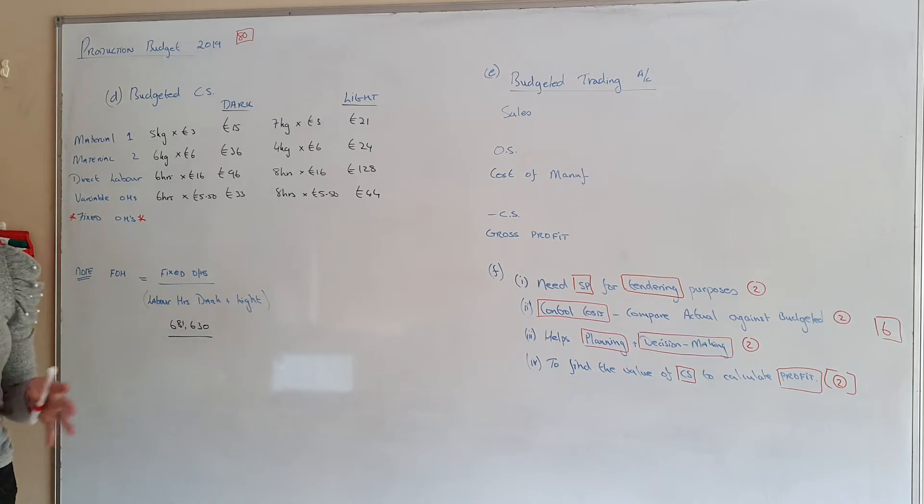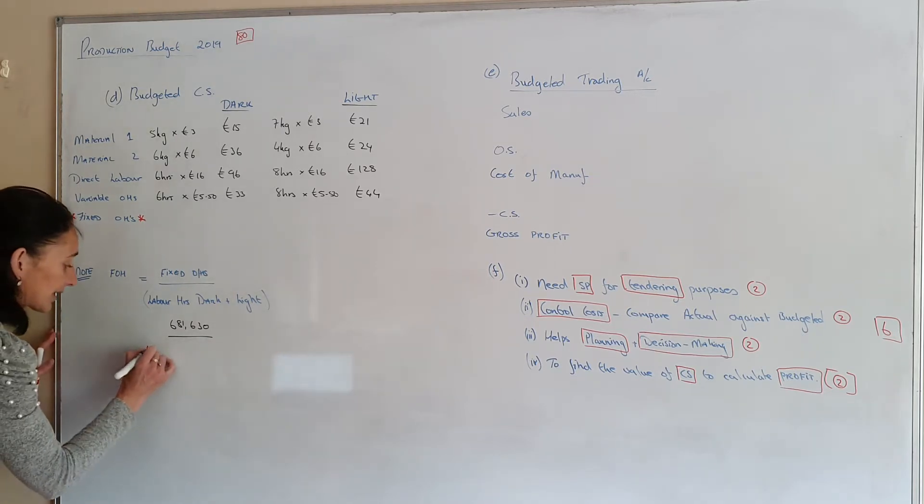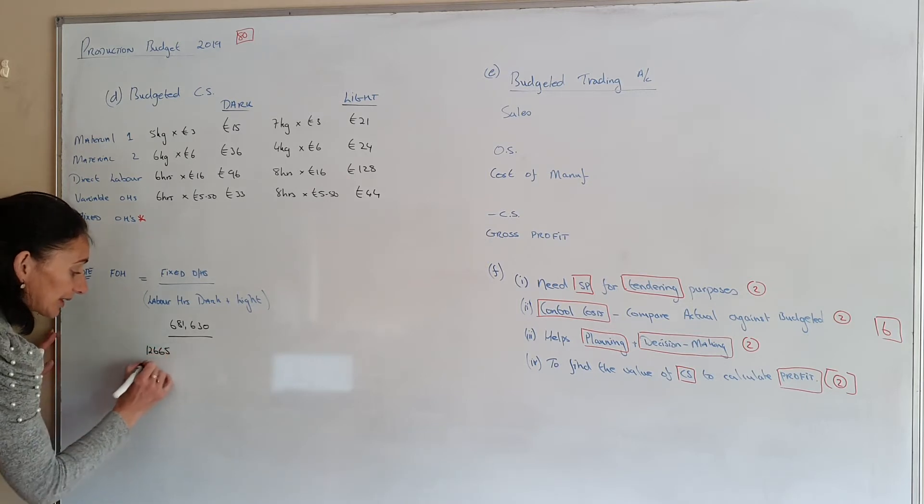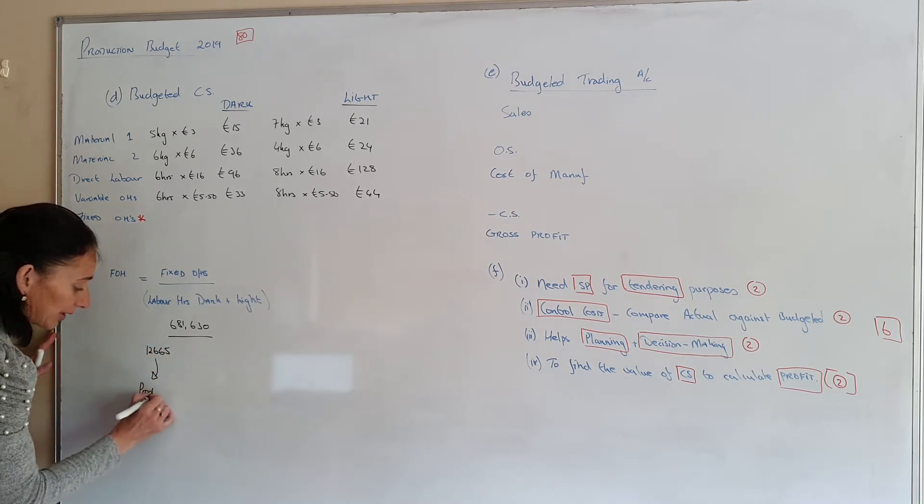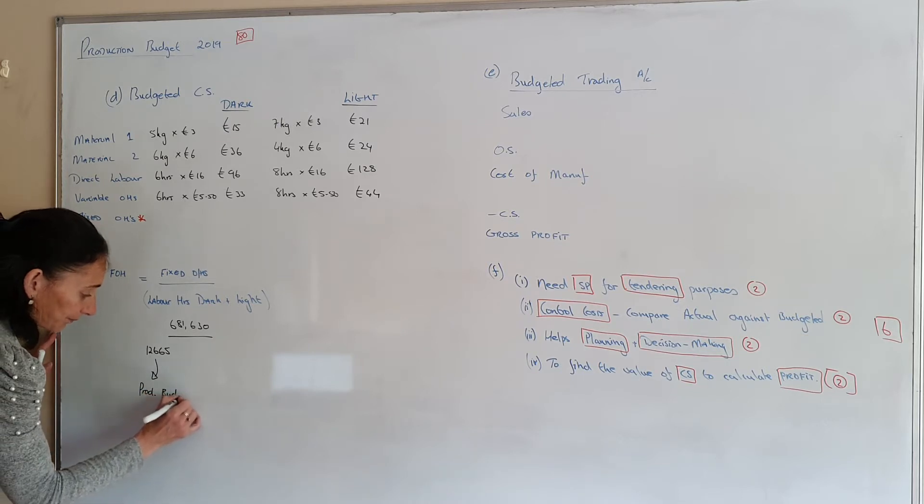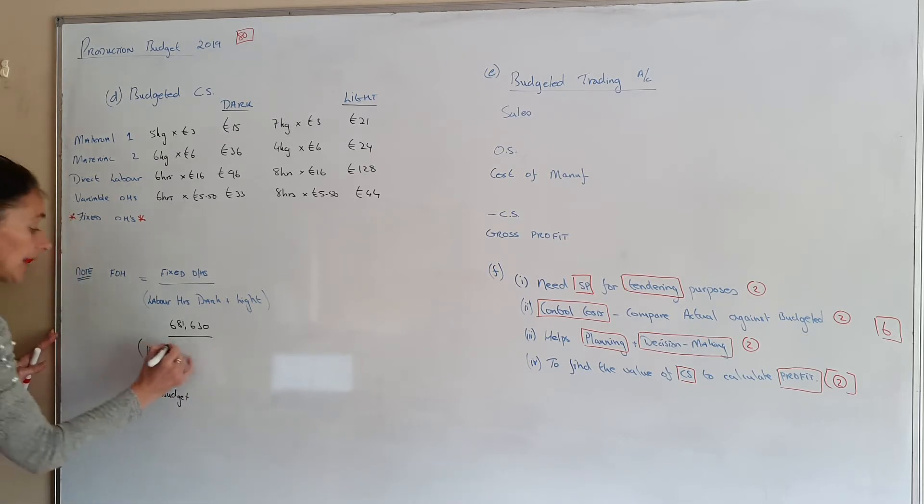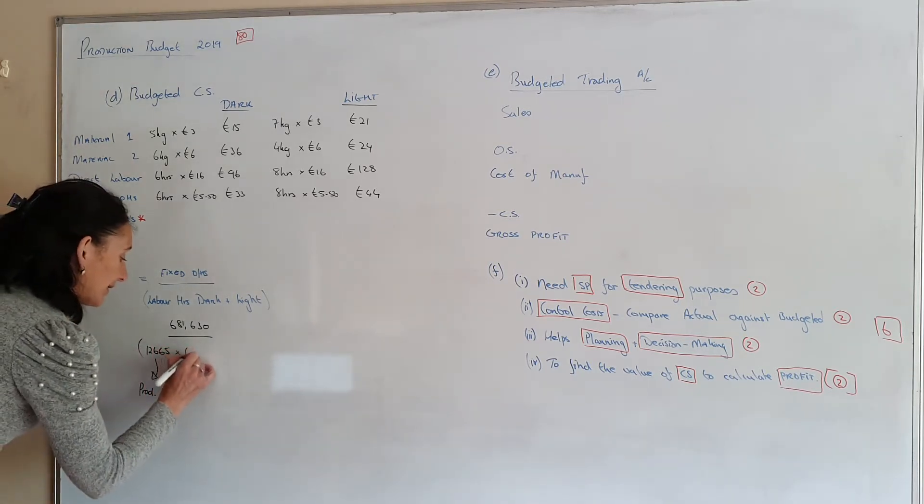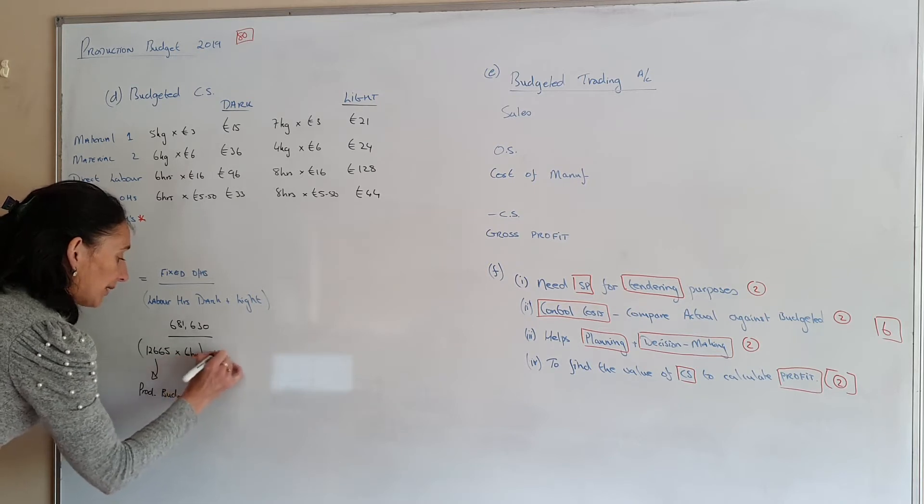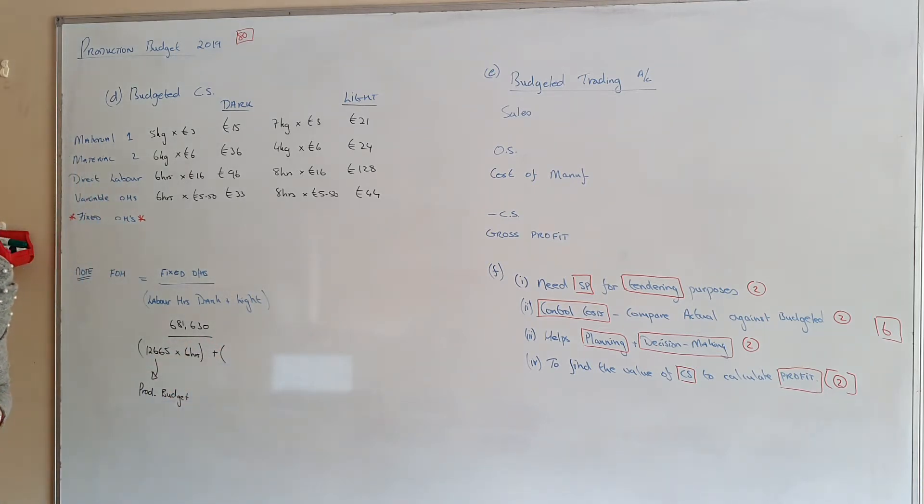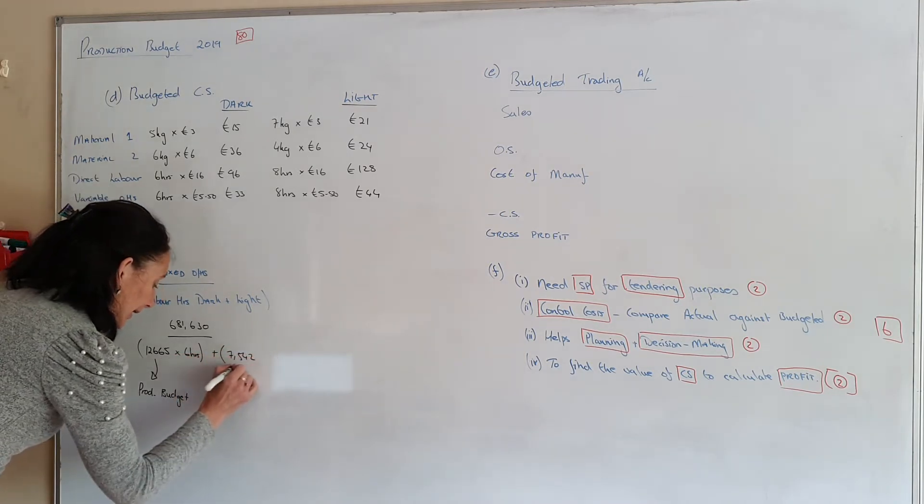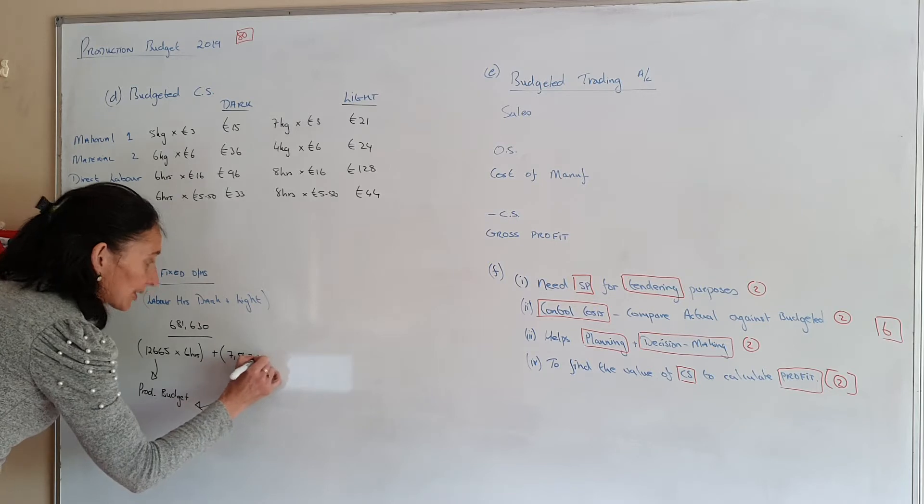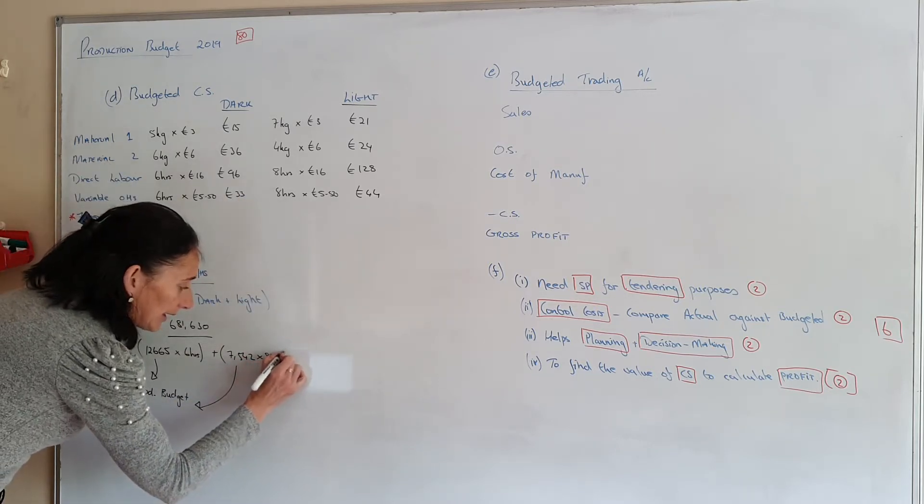Now the labour hours, how many units of dark were you going to make? You were going to make 12,665 units. And this figure came from my production budget. So that's how many units I need to make of dark. And the amount of labour hours that I spend on this is 6 hours. Plus I want to divide by the number of hours I'm going to work on light. And light is 7,542. And again that figure came from the production budget. Multiplied by the labour hours is 8 hours.